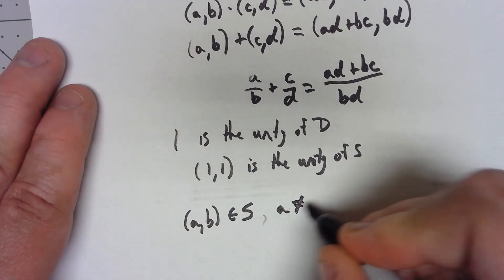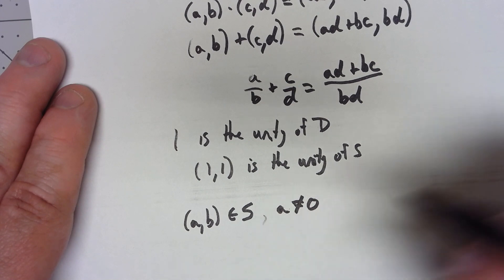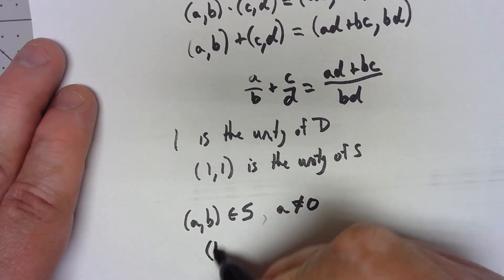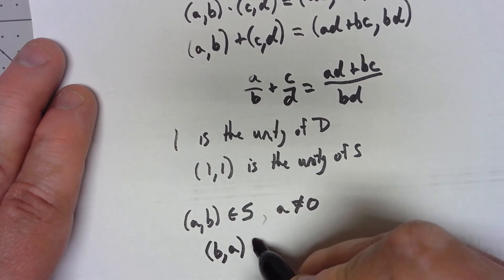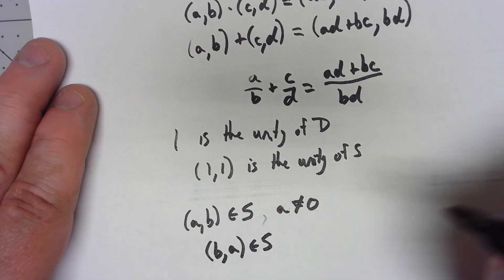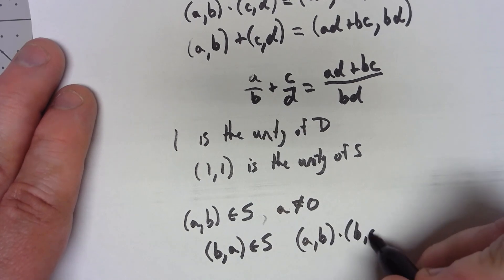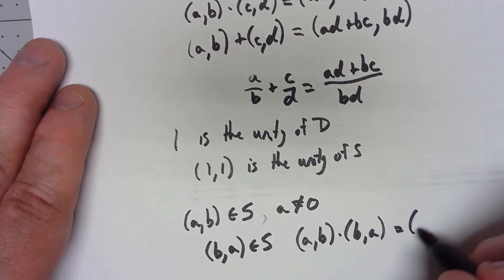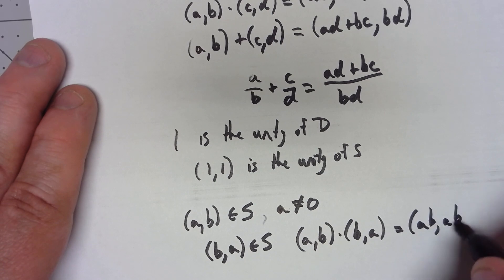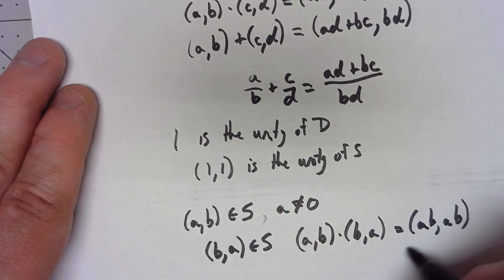So we can assume that a is not equal to 0. And if that's the case, then (b, a) is going to be in S and (a, b) times (b, a) which is going to be the equivalence class of (1, 1) which is our unity of that thing.